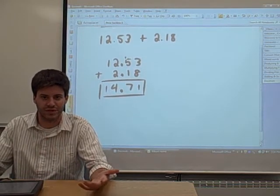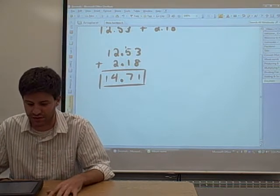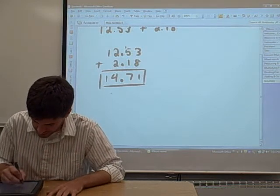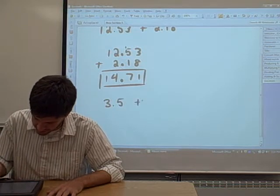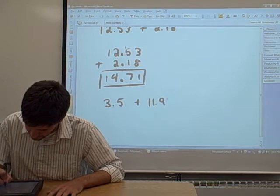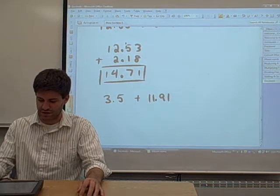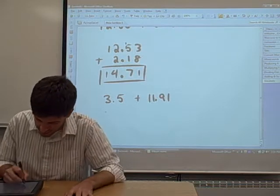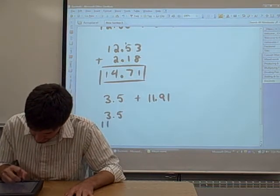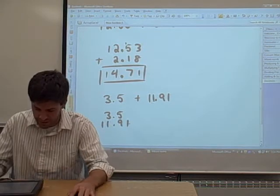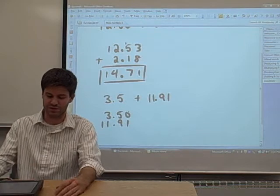Now, of course, it won't always be given to you in a form where you have equal number of decimal places in each of your numbers. So you could have something like 3.5 plus 11.91. Now, if this is the case, what you can do is write down your numbers, line up the decimals vertically. And if you see any gaps on the right hand side behind the decimal place, you can just fill it with a zero.